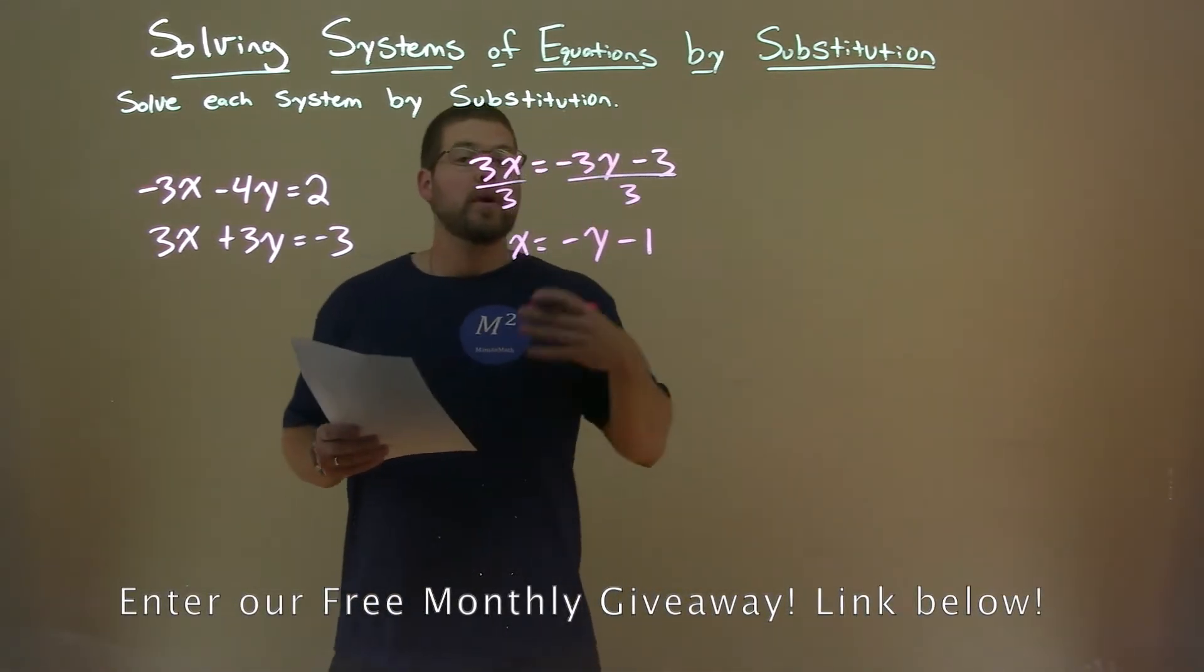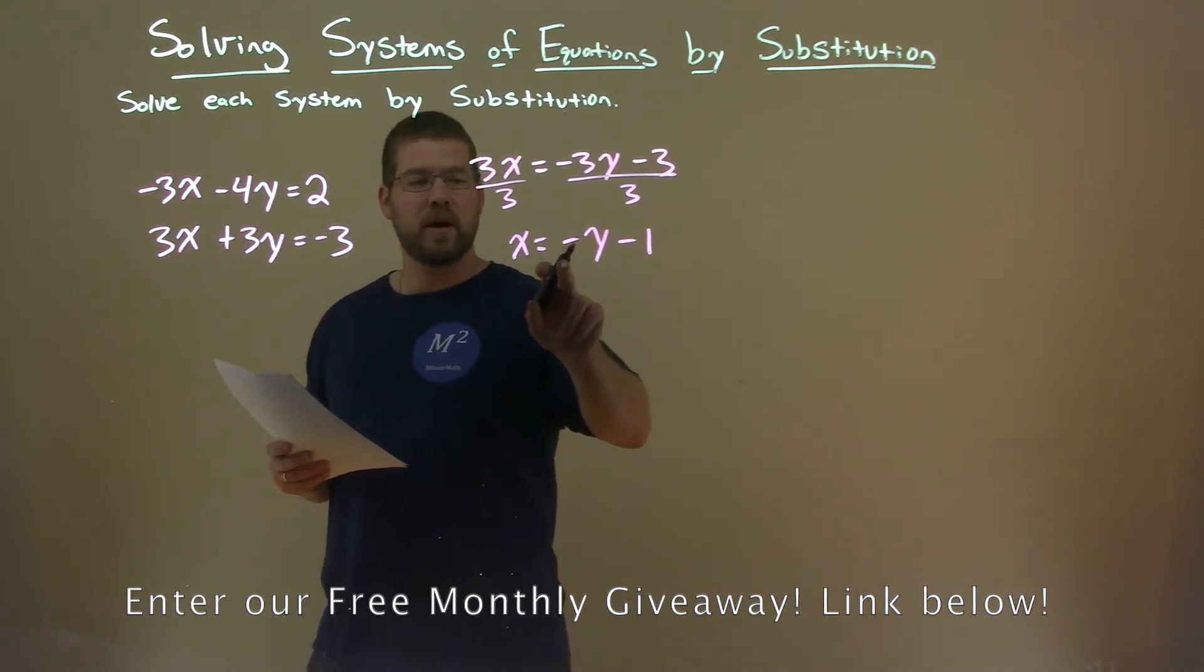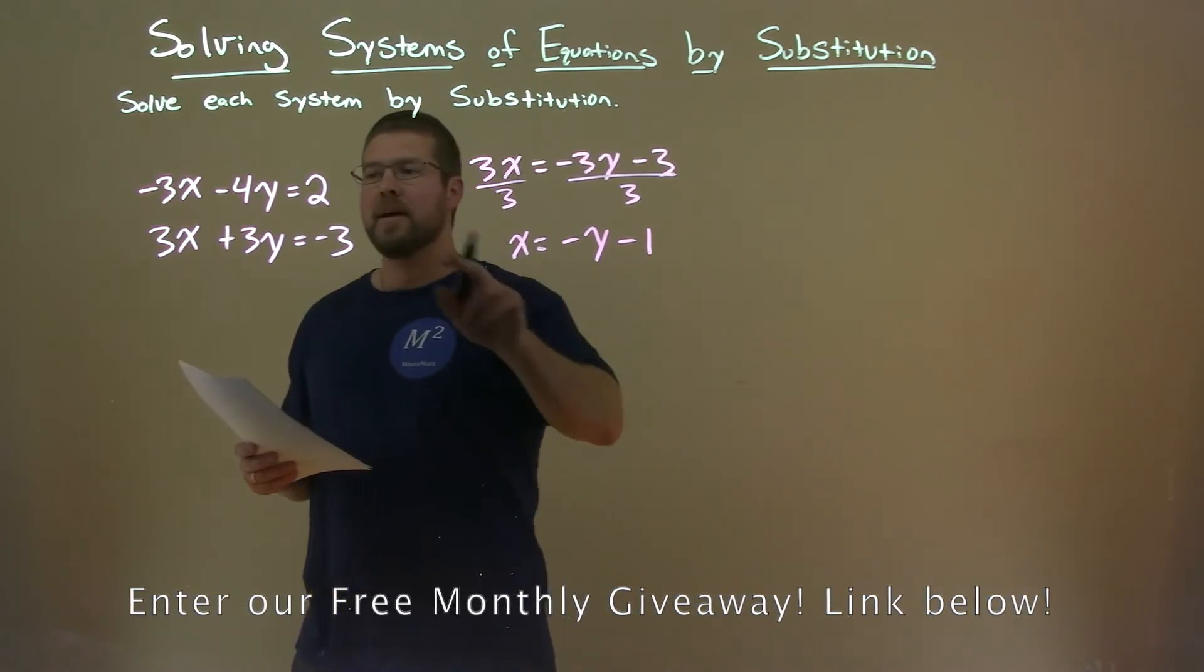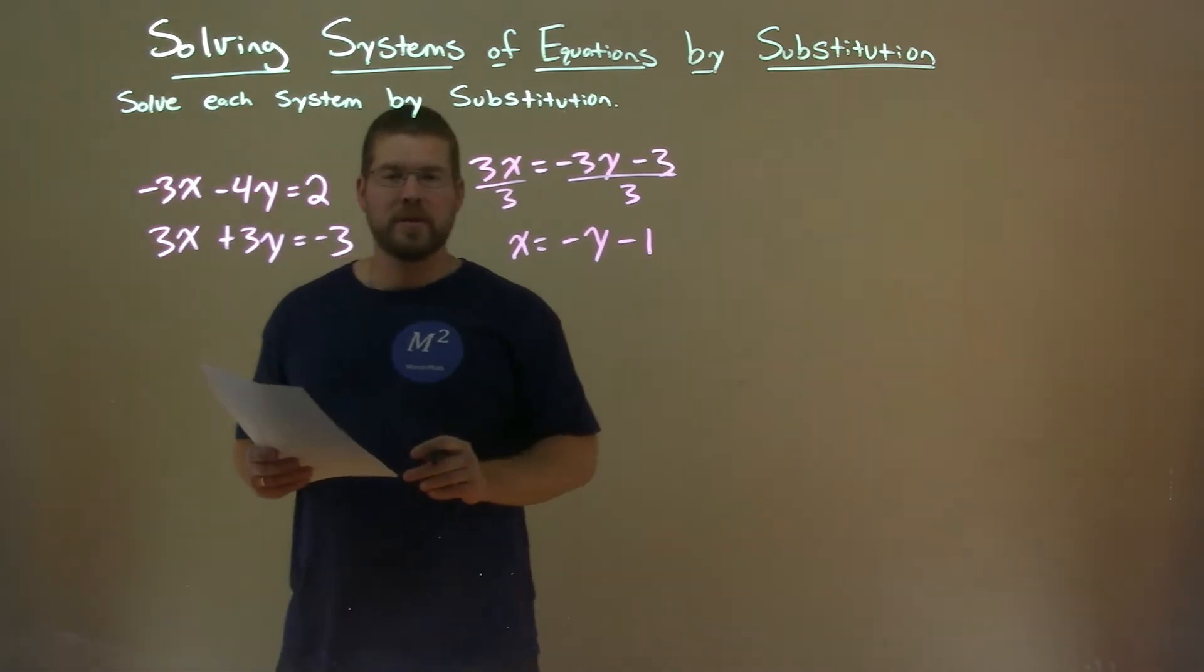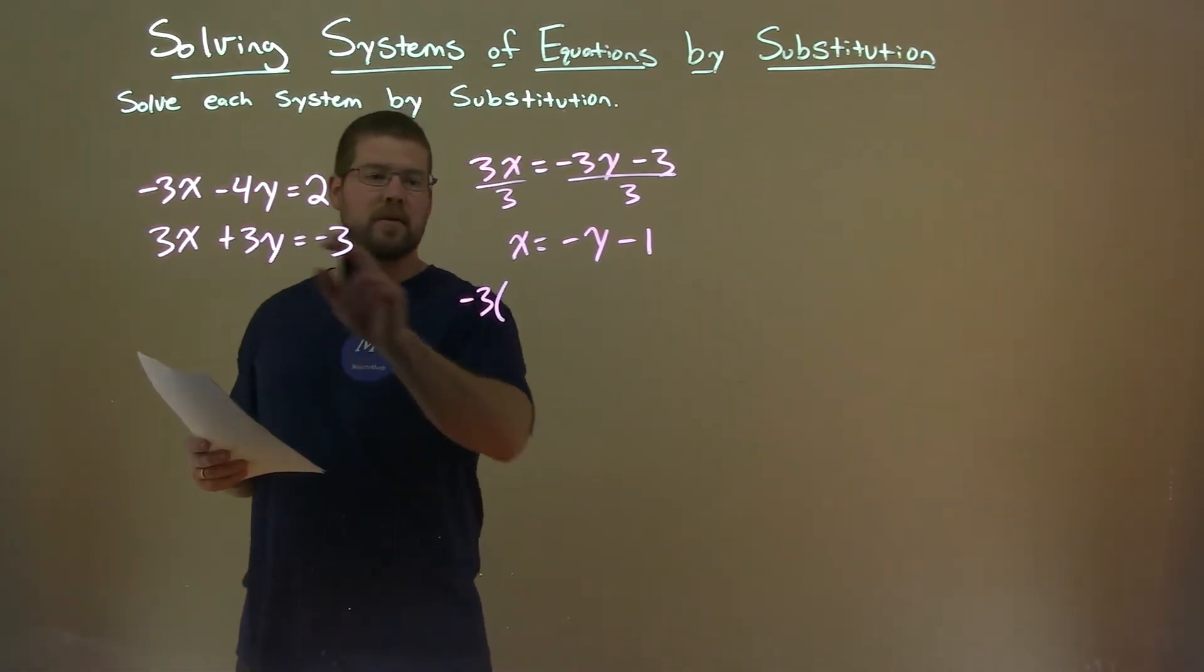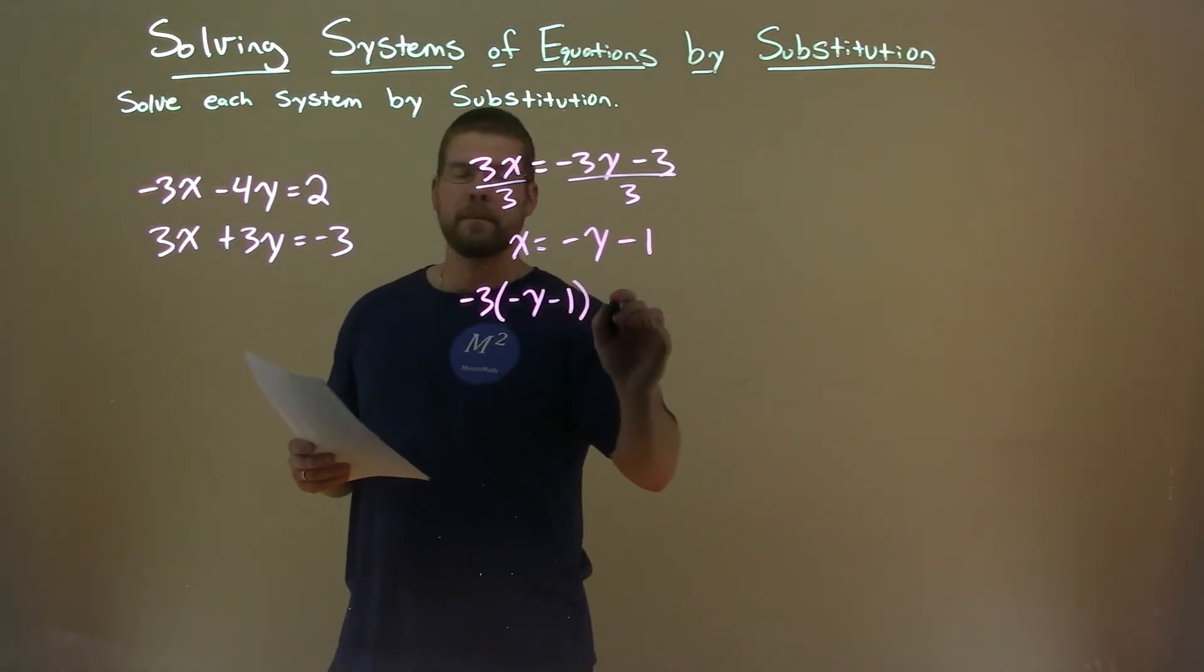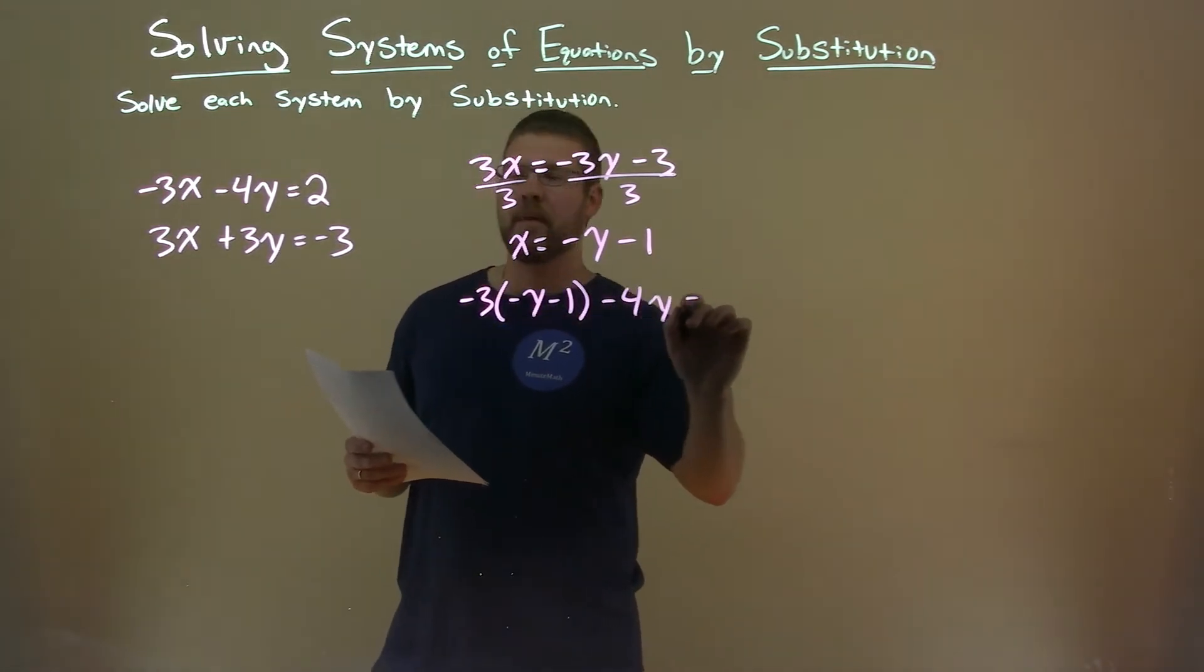All right, so where do we go from here? Well, we take that information, and we're going to plug that x value, negative y minus 1, into the x value of our other equation, the first one. So negative 3 times, instead of x here, I'm putting minus y minus 1. Then we subtract 4y, and that equals 2.